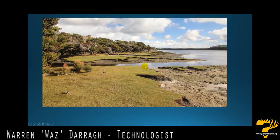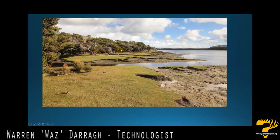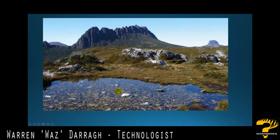Marsupial lawn out here for wallabies, patty melons to graze on. Out they come, and predators like thylacines hide in this area around here. They get close to the prey and then pounce. So this would be a great area for thylacines to actually operate in.